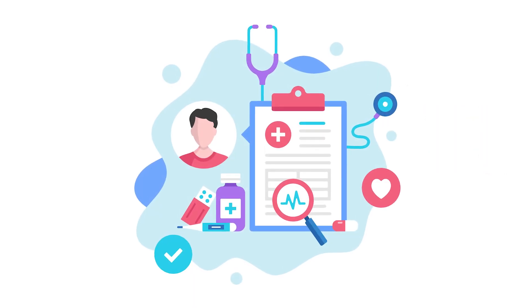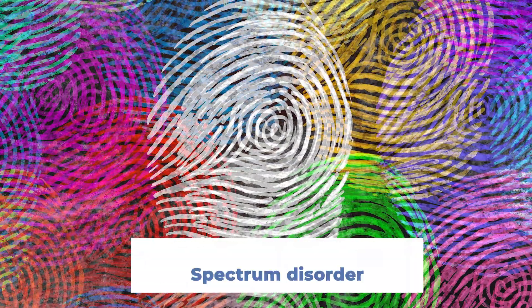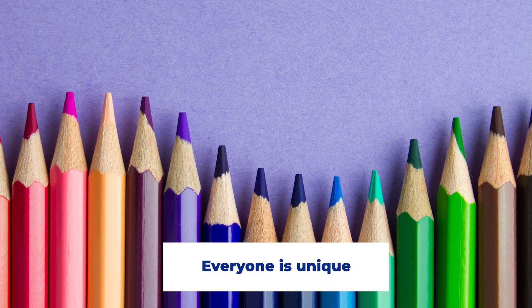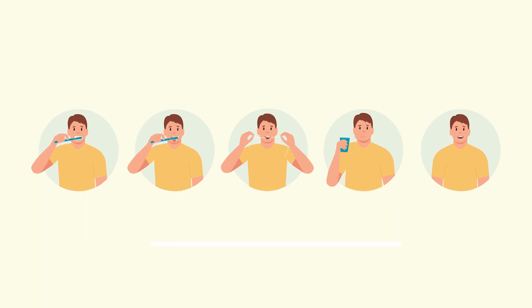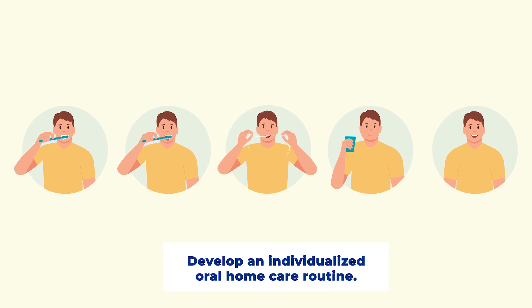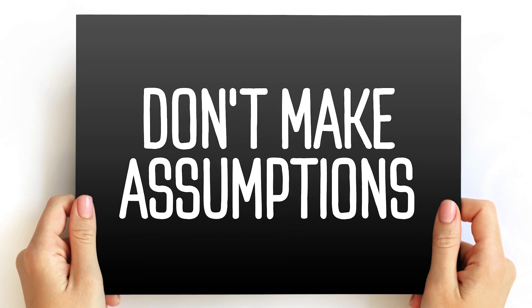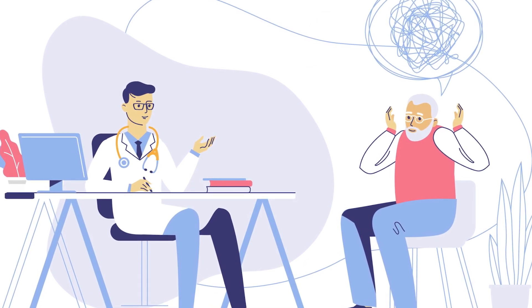While not always present, knowledge of these comorbidities specific to an individual might be helpful in understanding communication approaches and recommended supports. In some cases, ASD manifests differently for each individual, leading to its designation as a spectrum disorder. Each person is unique, so identifying an individual's personality, needs, likes, and dislikes is essential to developing a trusting relationship and a successful individualized oral home care routine. It is most important to avoid making assumptions about someone's ability based on a broad diagnosis.